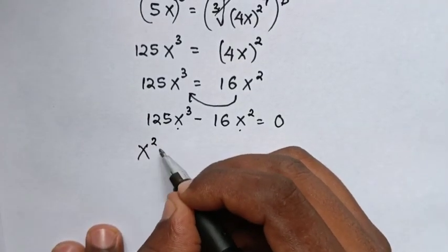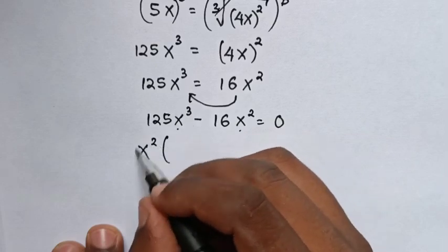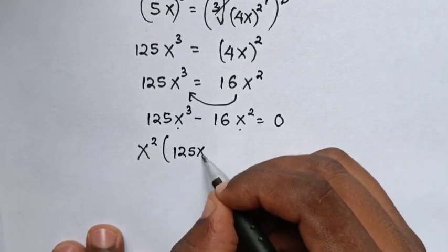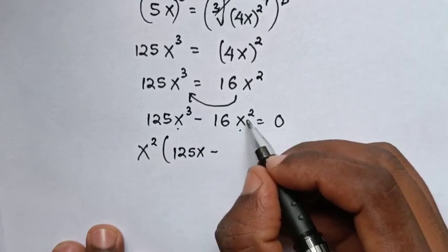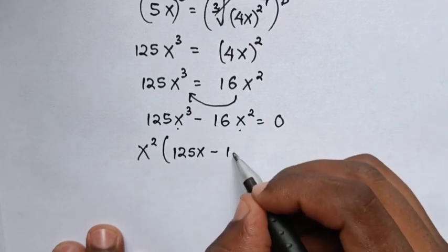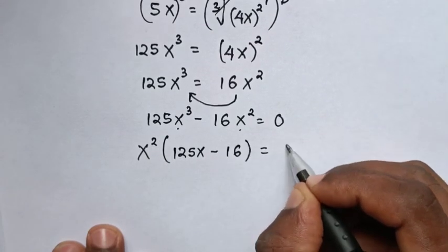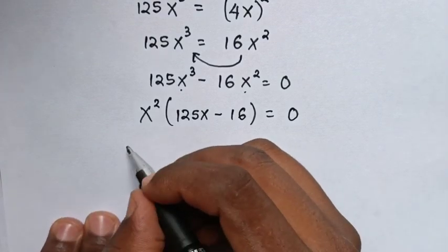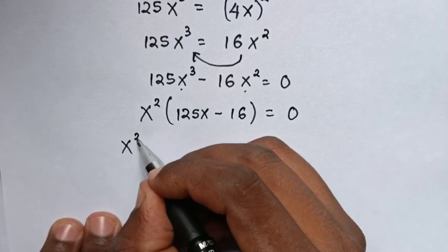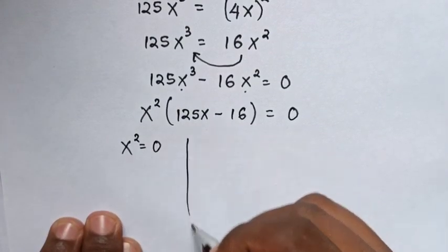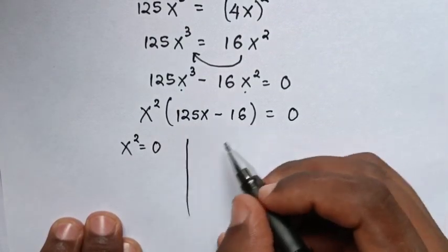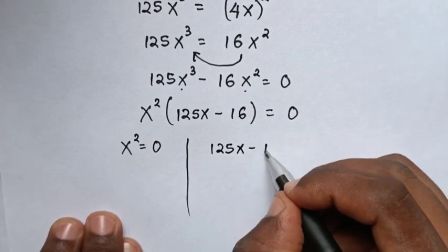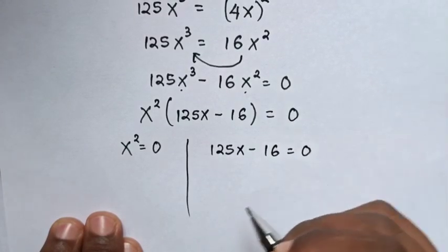So x square out of bracket: this divided by x square is 125x minus, this divided by x square is 16, bracket is equal to 0. Now we have two cases where x square is equal to 0 and 125x minus 16 is equal to 0.